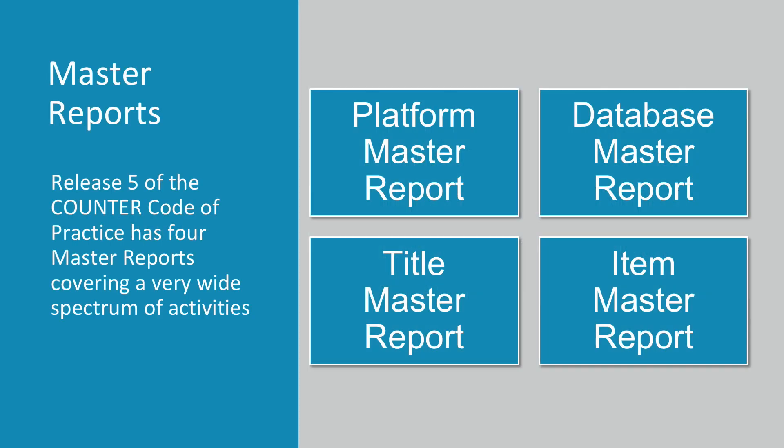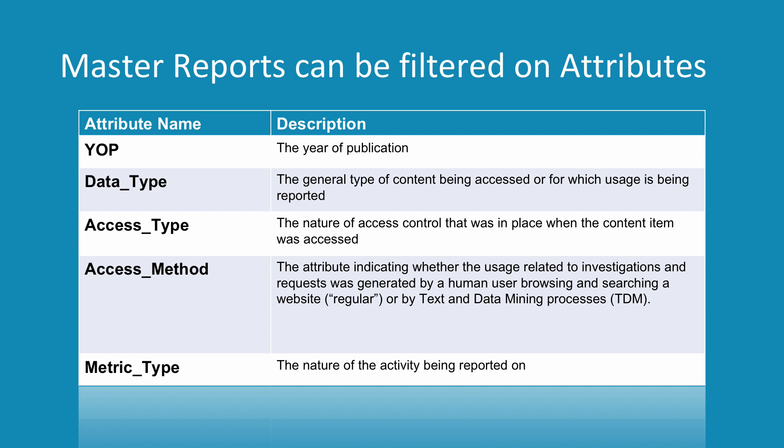Release 5 of the Counter Code of Practice has four master reports: the Platform Master Report, the Database Master Report, the Title Master Report, and the Item Master Report. Master reports can be filtered on attributes, notably Year of Publication (YOP), Data Type, Access Type, Access Method, and Metric Type. Class 1 in this series explains metric types, and we will shortly bring you a class which explains the other attributes.